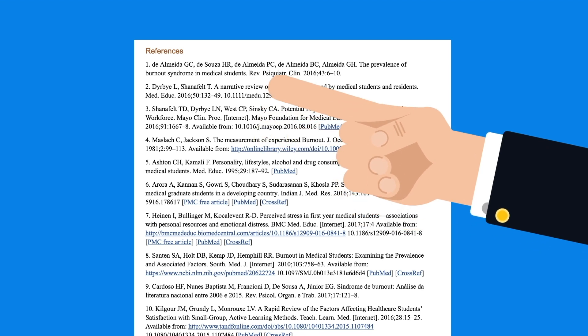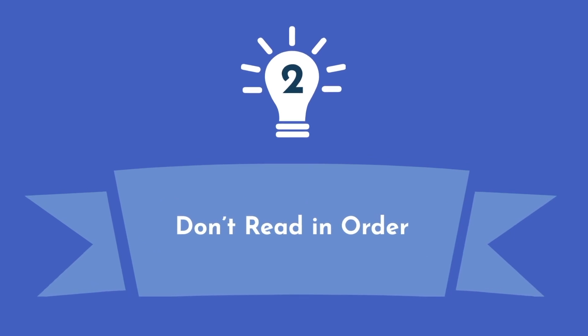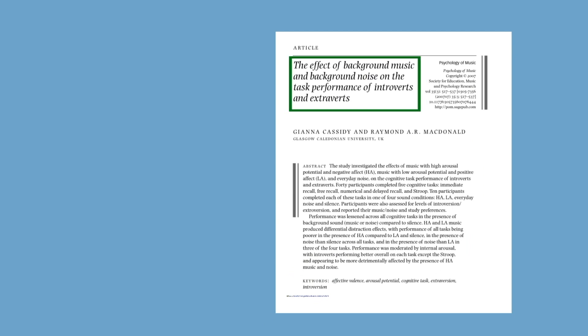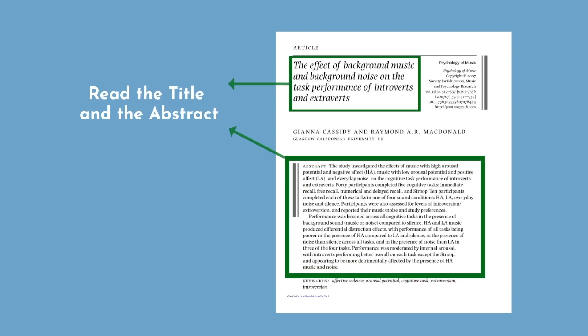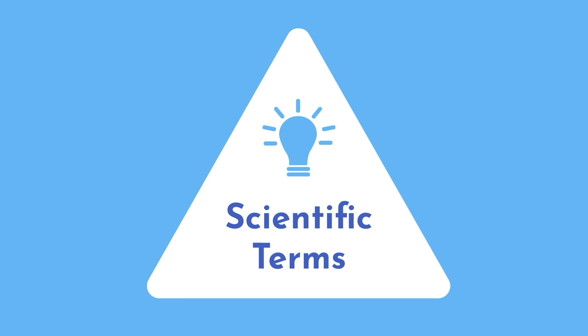Now that you've identified your primary goal, it's time to begin reading. Not every section in a research article is created equal. Unlike reading a traditional book, I don't advise you read a research paper in order. First, you need to read the title and the abstract to get an overview of the paper. If at any time during your reading you come across a word or acronym that you don't understand, stop and look it up. This is not like a novel where you can infer the meaning — terms you don't understand are often scientific terms critical to your understanding of the paper and its findings.